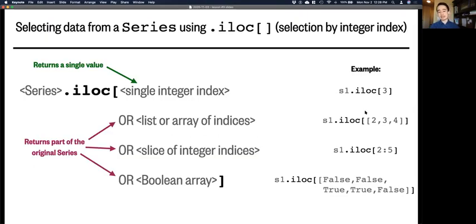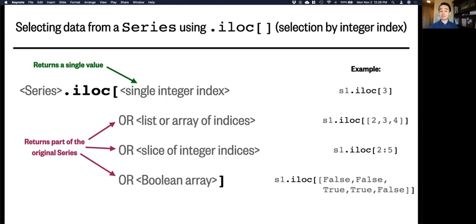Instead of using normal bracket indexing to get values from a series, we use this funny looking dot iloc brackets syntax, which stands for index location, when we want to select data by position or integer index. And we can use a single index inside the brackets, like three, to get the third element of the series. Or we can use multiple indices in a list or array like dot iloc, double brackets, two, three, four, to select those three indices. Or we can use integer slicing to get the second up to the fifth elements, just like for a list or array.